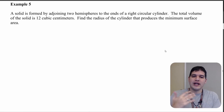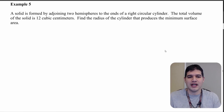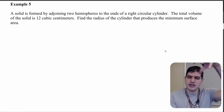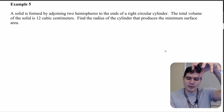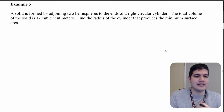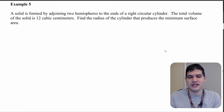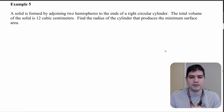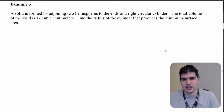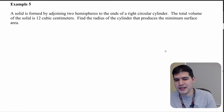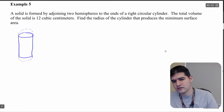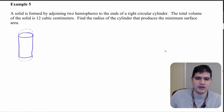Looking at this problem, we have a solid formed by adjoining two hemispheres — a full sphere cut in half — put at the top and bottom of a cylinder, and the total volume of the solid is 12 cubic centimeters. Find the radius of the cylinder that produces the minimum surface area. Let me draw a picture real quick — there's my picture right there.